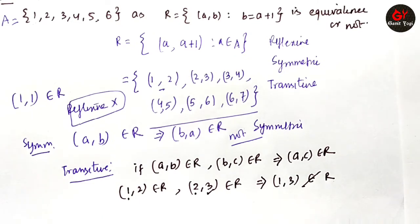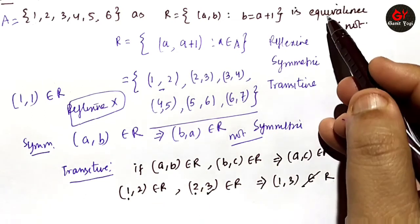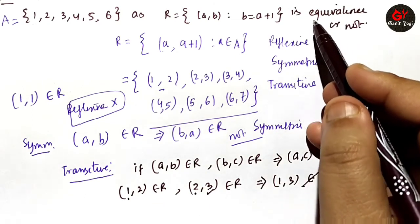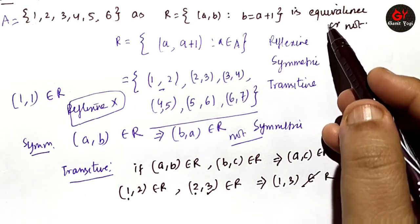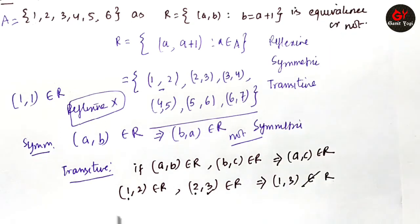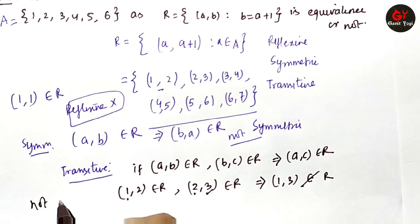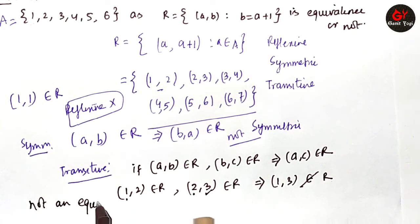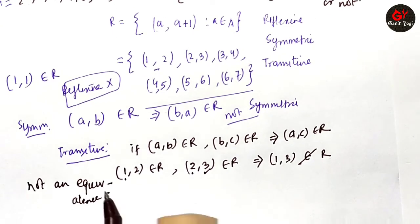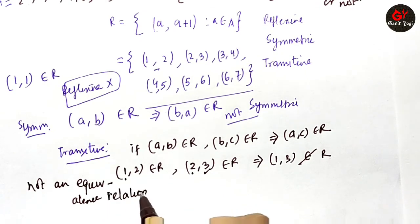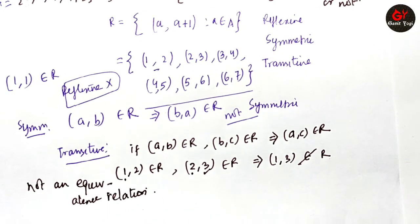So, it is neither reflexive, nor symmetric, nor transitive. Therefore, it is not an equivalence relation. The most important thing is to carefully look at the relation — which elements it contains — and from that it will be clear whether the reflexive, symmetric, or transitive condition is satisfied or not.